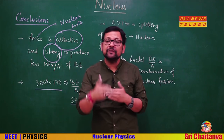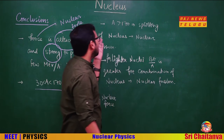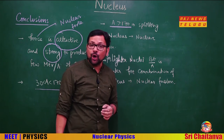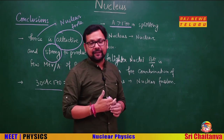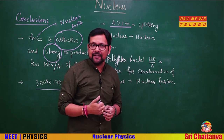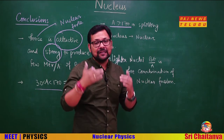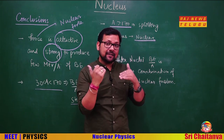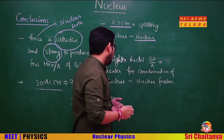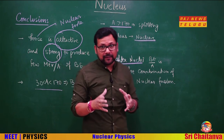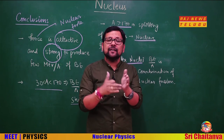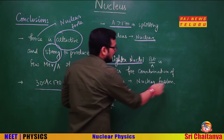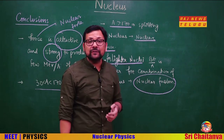For A > 170, binding energy per nucleon decreases, indicating instability. To gain stability, the nucleus splits into two lighter nuclei — this is nuclear fission, seen on the right-hand side of the binding energy curve. For lighter nuclei (A < 30), combining nuclei leads to greater binding energy per nucleon and more stability — this process is nuclear fusion, which occurs inside the sun.